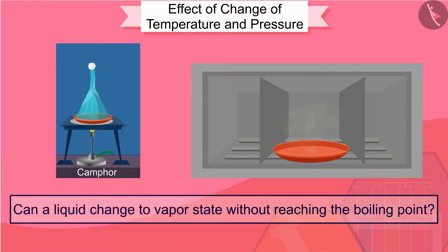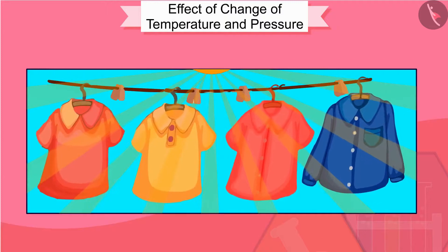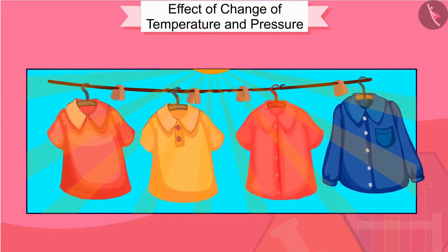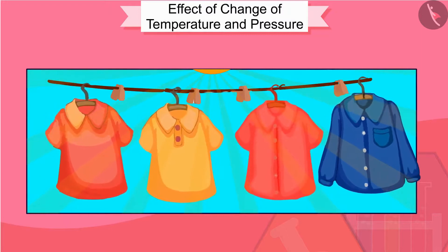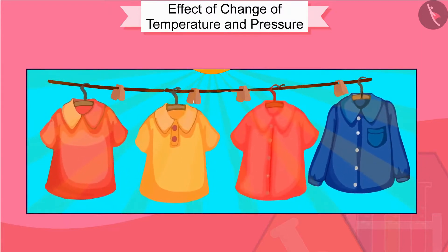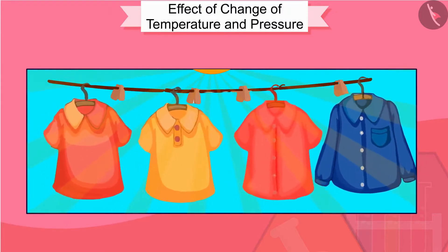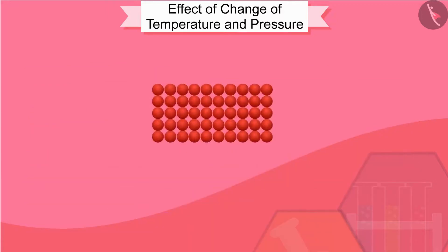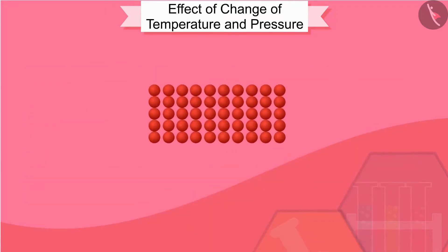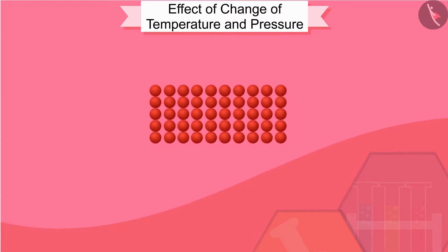Can a liquid change to vapor state without reaching the boiling point? Let us understand this with an example. When we dry clothes, the water in them slowly converts into vapor. How does this happen? What happens to water in such a situation?